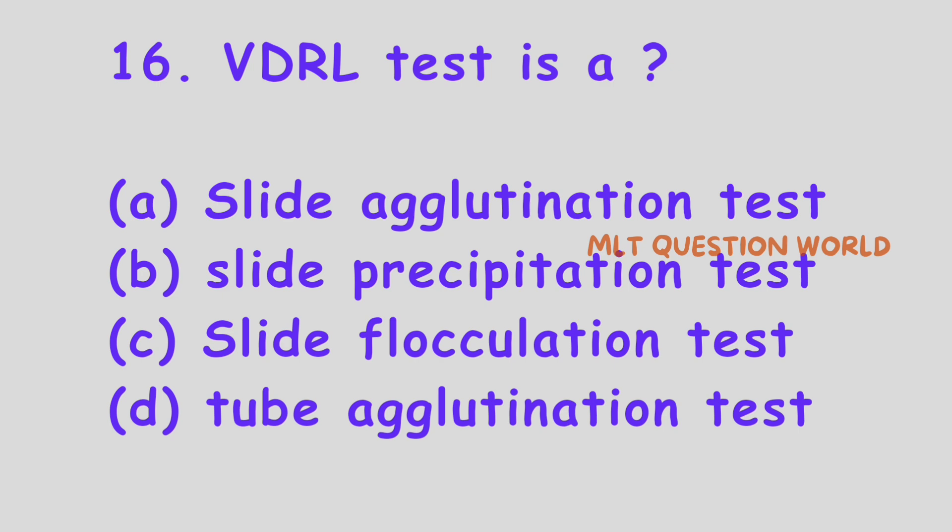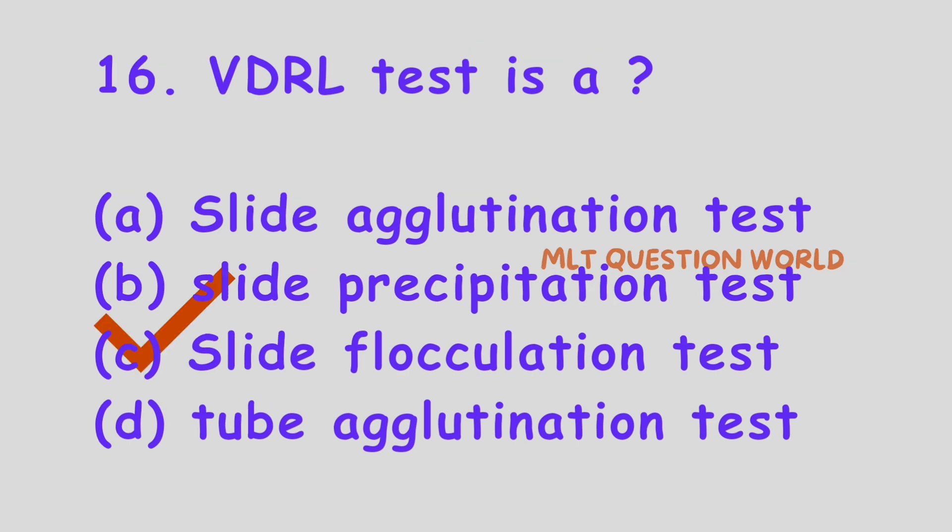Question number 16. VDRL test is: Option A, Slide agglutination test; Option B, Slide precipitation test; Option C, Slide flocculation test; Option D, Tube agglutination test. VDRL test is coming under which of the following categories? The right answer is Option C, Slide flocculation test.